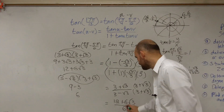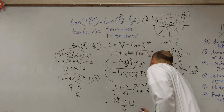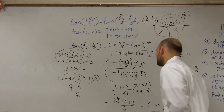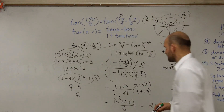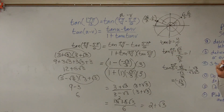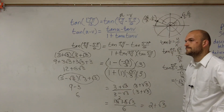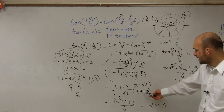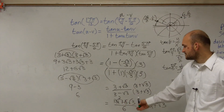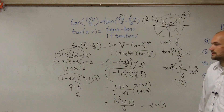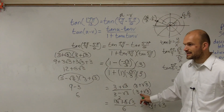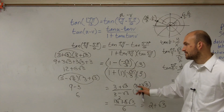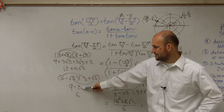Dividing 6 into both terms in the numerator: 12/6 = 2 and 6√3/6 = √3. So the final answer is 2 plus the square root of 3. Remember, we multiplied by the conjugate because we don't want a binomial with an irrational number in the denominator. Whatever you multiply on the bottom, you must multiply on top.